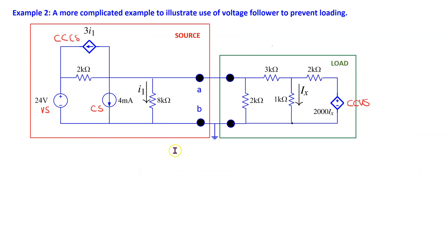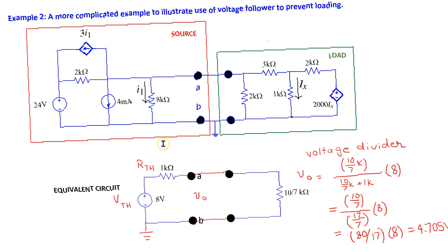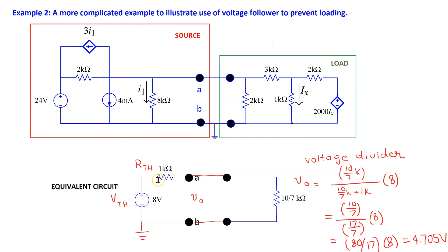Next, let us consider a more complicated example. The source circuit comprises multiple sources and resistors — specifically one independent voltage source, one independent current source, one current controlled current source, and two resistors. The load circuit has one current controlled voltage source and multiple resistors. Since the source circuit has one independent source and resistors, we can use the Thevenin equivalent voltage source and a single resistance. Similarly, since the load circuit has one dependent source only and multiple resistors, we can use the Thevenin equivalent circuit technique to represent the load as a single resistance.